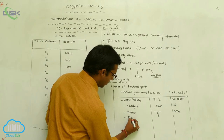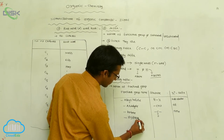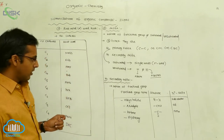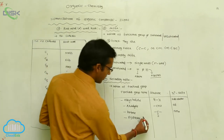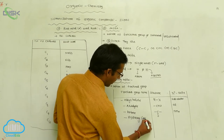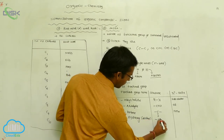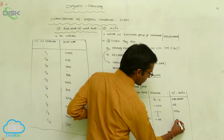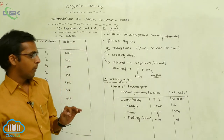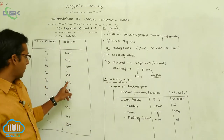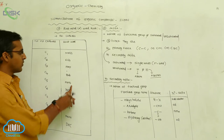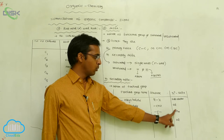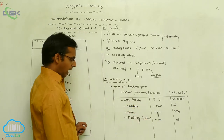If the hydroxy group (–OH) acts as the functional group, the compound is an alcohol. The secondary suffix is 'ol'. So the names become propanol, butanol, pentanol — the last part of the name is always 'ol'.